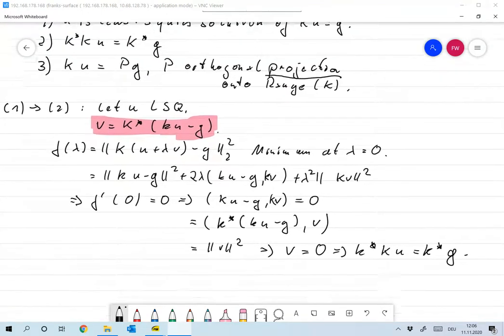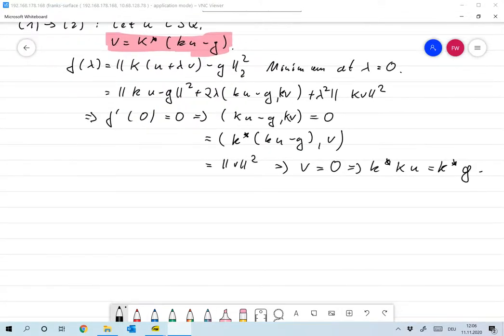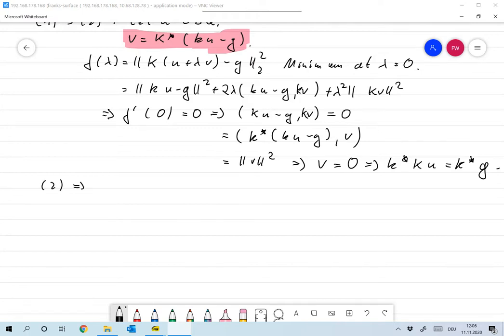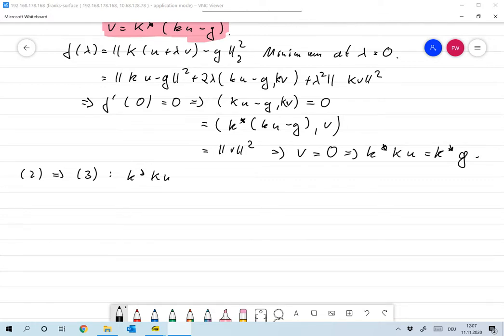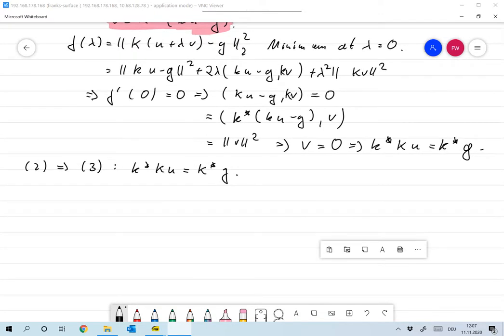And this is what I had implied. Now let's go from two to three. And I've already prepared this, so let's just take this way. Now take any v in x, and let's assume that now k star ku is equal to k star g.